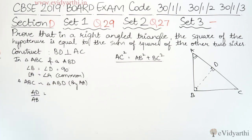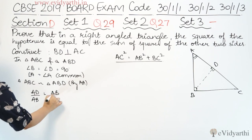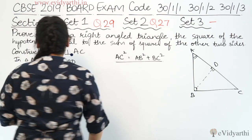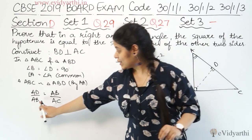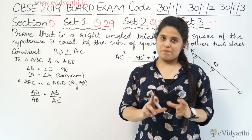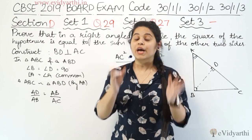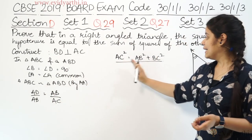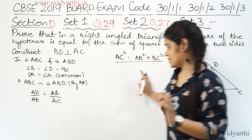AB upon AC — बड़े वाले triangle में देखो AB upon AC. अब इसको cross multiply करेंगे तो यह AB का square बन जाएगा — AD × AC = AB². इसलिए जो corresponding sides लोगे, वो इस तरह से लोगे कि हम इन तीनों में से कुछ use कर सकें.